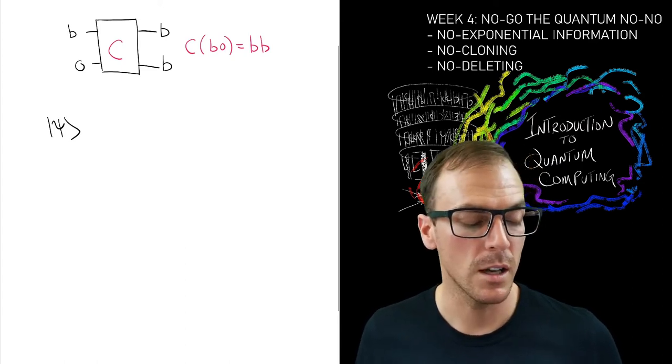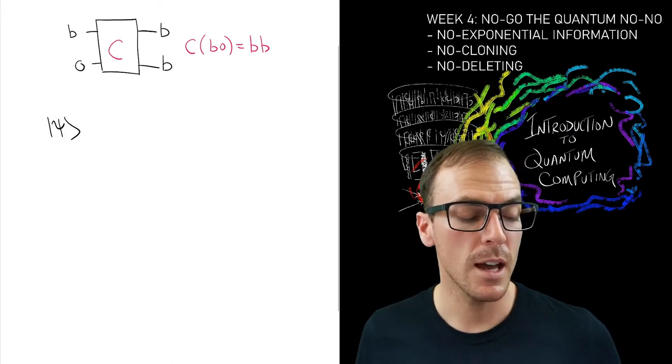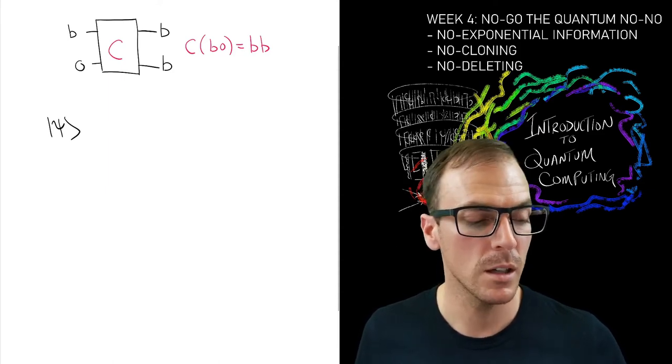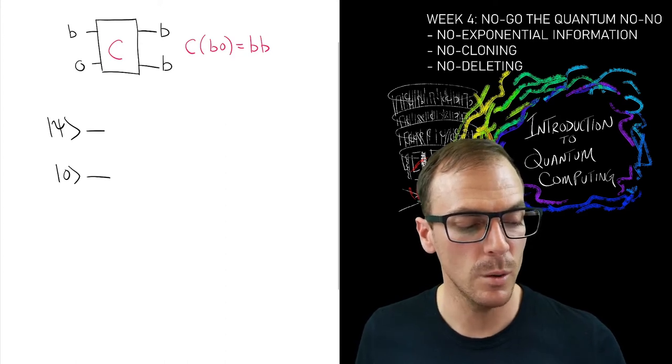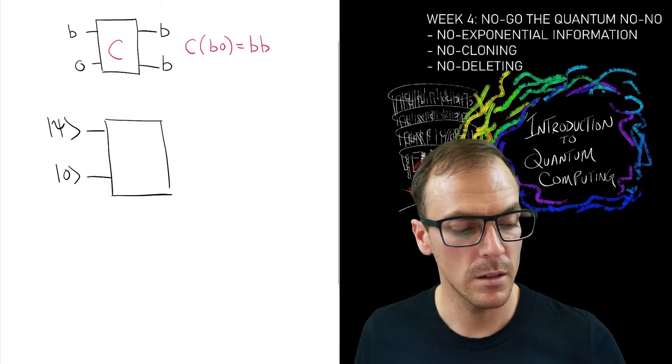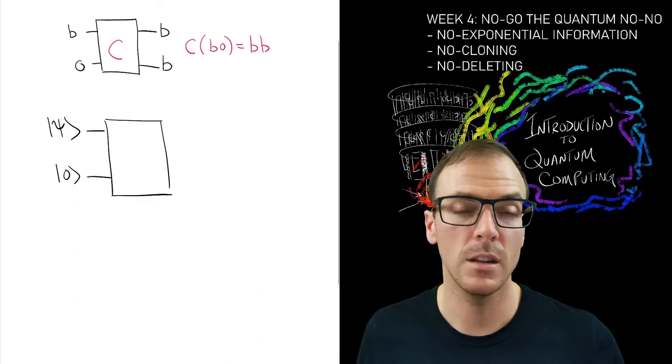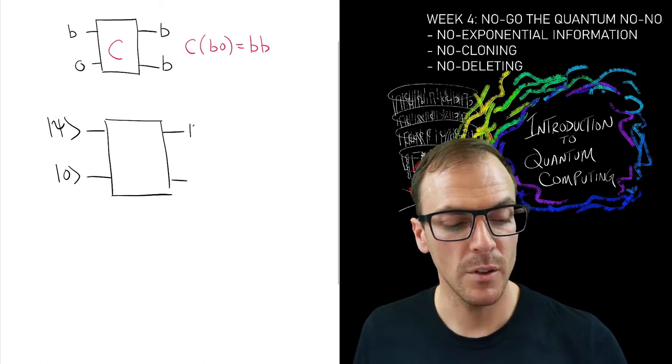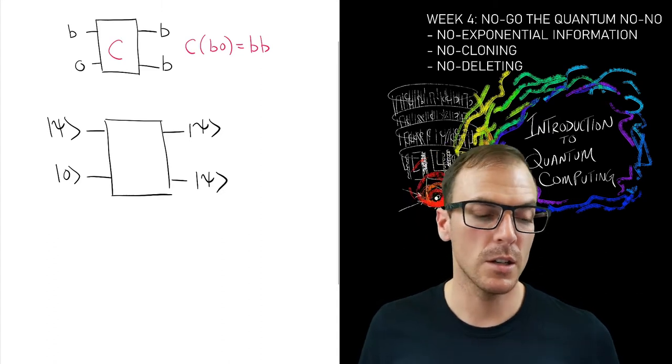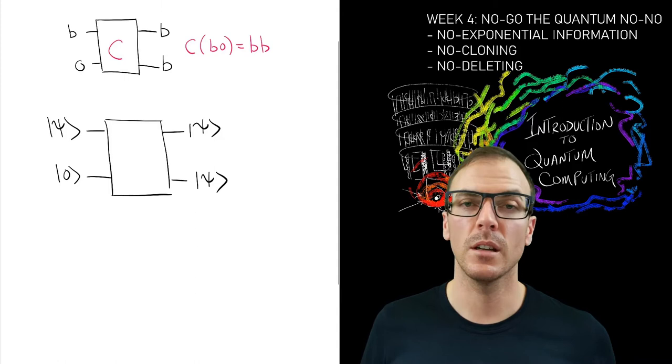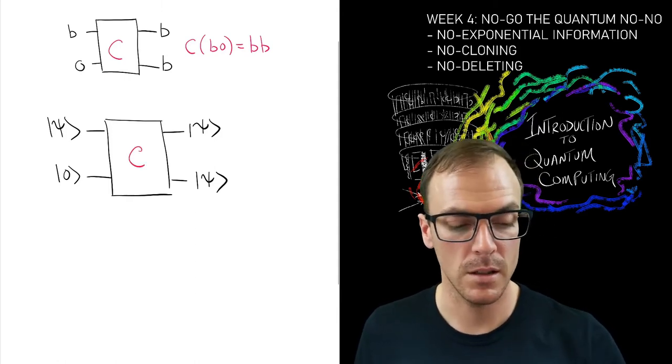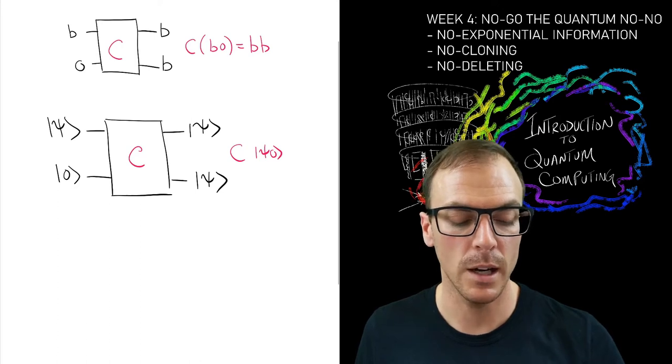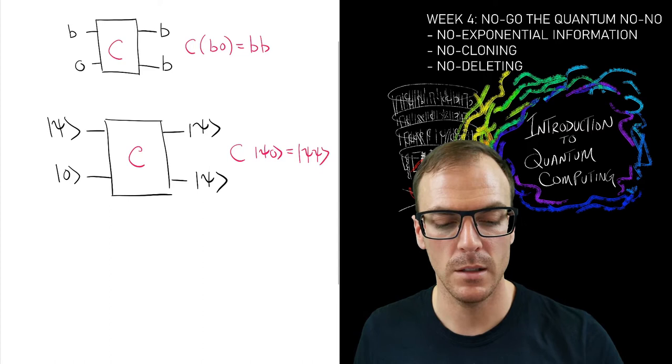With quantum data I have these states represented by vectors in complex linear space—they can be qubits. Let's imagine they're qubits for now and ask: can I take this qubit state |ψ⟩ and some blank state |0⟩ and perform one of these allowed unitary operations such that at the output I have two copies of |ψ⟩?